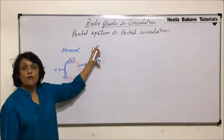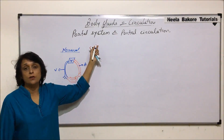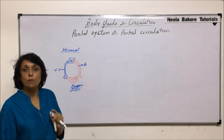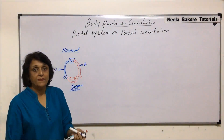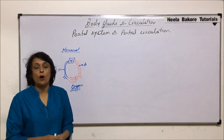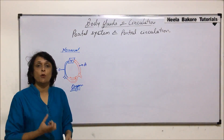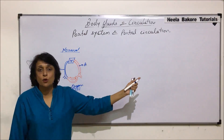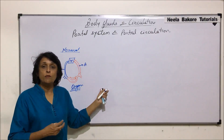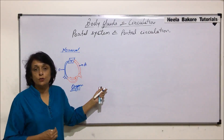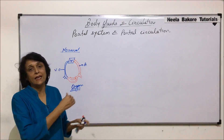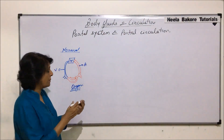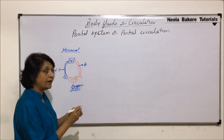But in case of portal system, there is a special vein which is called a portal vein. Depending upon what this portal vein is doing, we have three types of systems — two of which are found in human beings and all three in lower organisms. We will talk about those systems in detail.